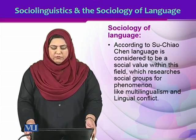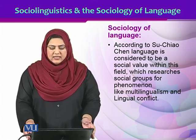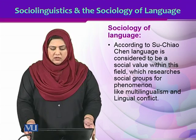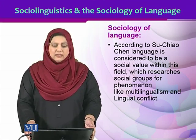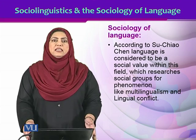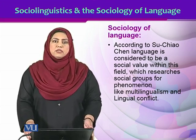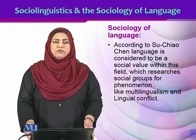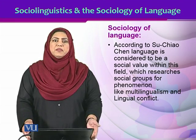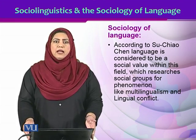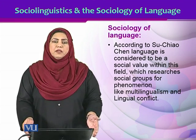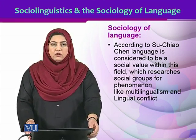Commenting on the sociology of language, Suu Khaotian asserts language is considered to be a social value within this field, which researches social groups for phenomena like multilingualism and linguistic conflict. How people use more than one language within a society and what is the influence of all that on the society is a part of the studies in sociology of language. For example, in Pakistan, people use English, Urdu, and their regional languages according to the situation — they mix them and switch codes as well. What is the impact of all that on society falls under the studies in sociology of language.